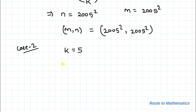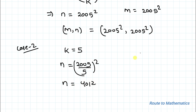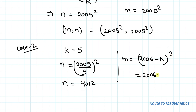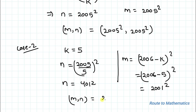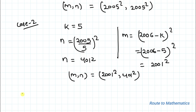In Case 2, we consider k = 5. From equation 2, n = (2005 / 5)² = 401². From equation 3, m = (2006 − 5)² = 2001². So for k = 5, we get m = 2001² and n = 401².